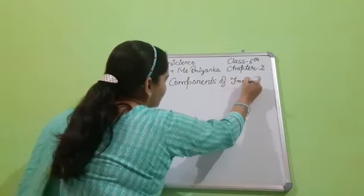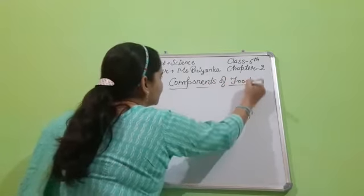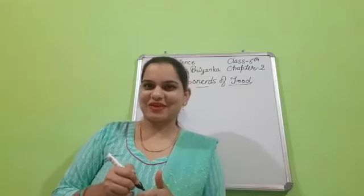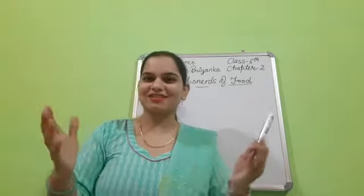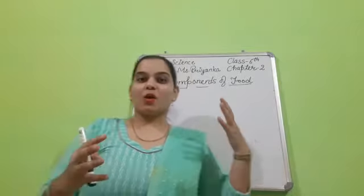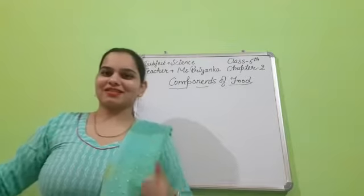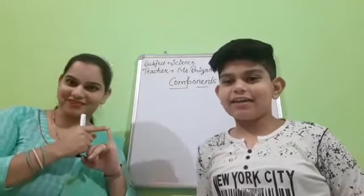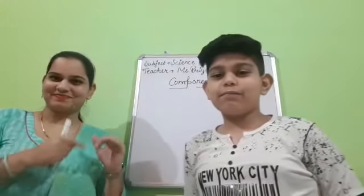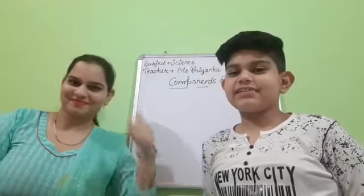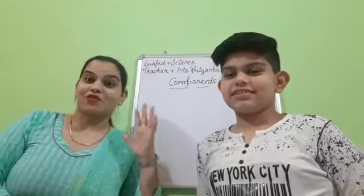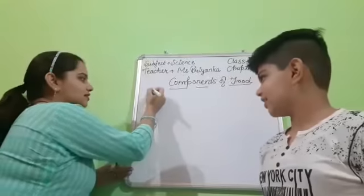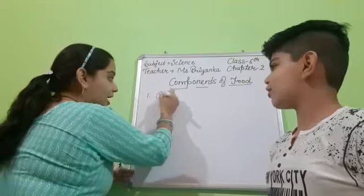In previous class also you have read about these components of food. Can you tell me? Yes, ma'am. Please come here and tell the class what we read in previous class. We read that carbohydrates, fats, proteins, vitamins and minerals — five components we have read in our previous class. First one it was? Carbohydrates.